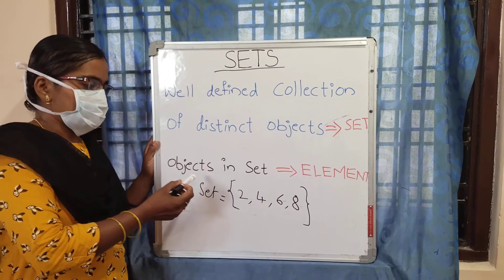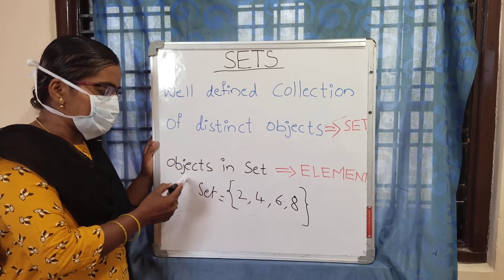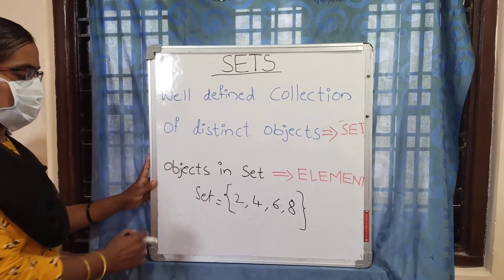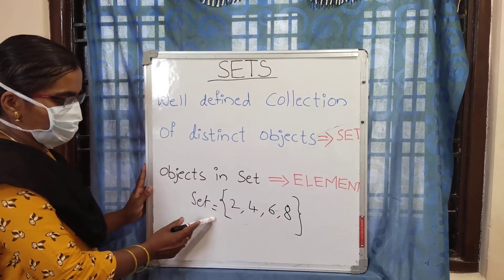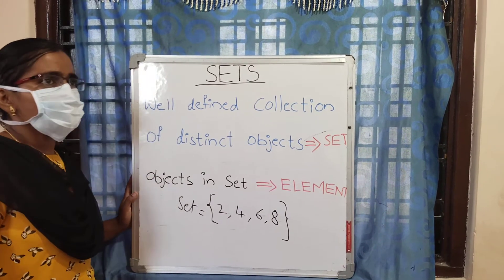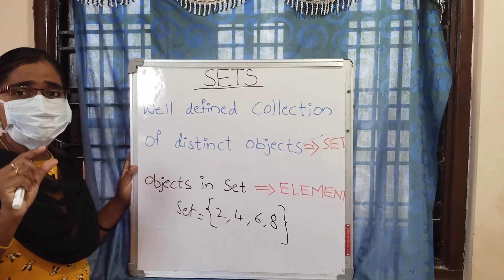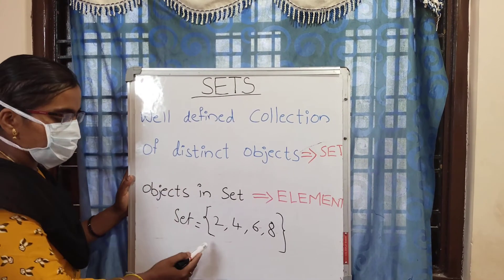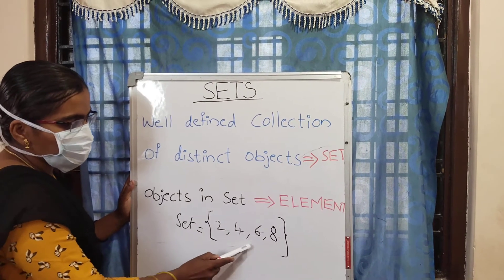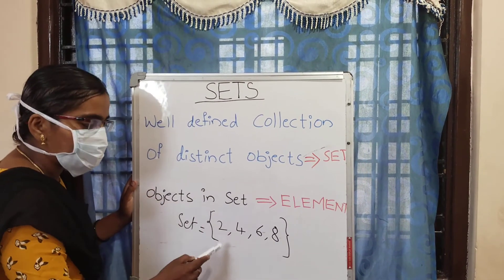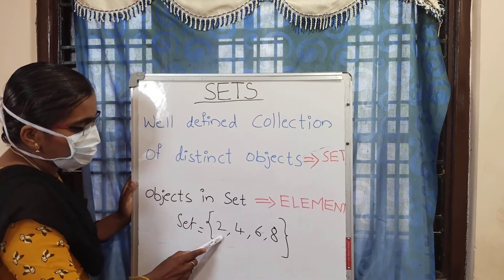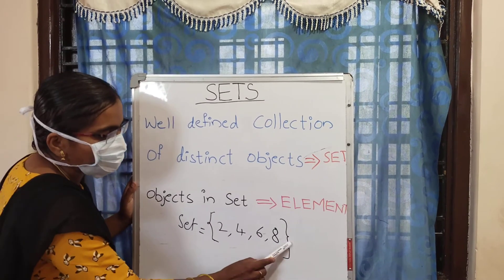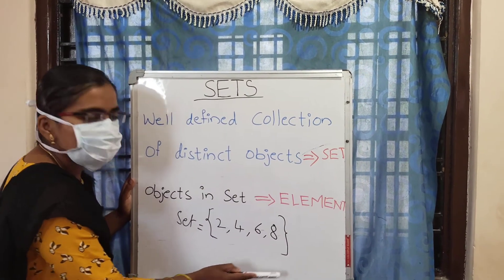The objects inside a set are called elements. For example, here I wrote a set of even numbers below 10. Even numbers below 10 are 2, 4, 6, and 8. If you write 2, 4, 6, 8 inside these brackets, this is called a set.